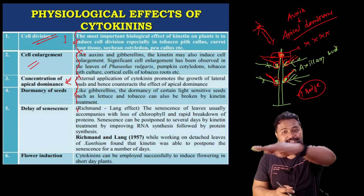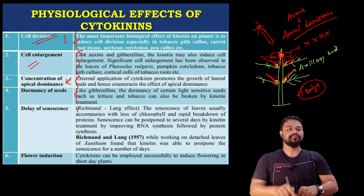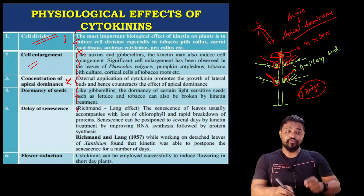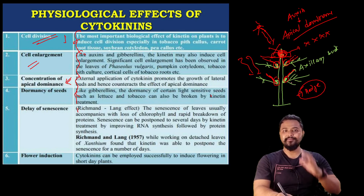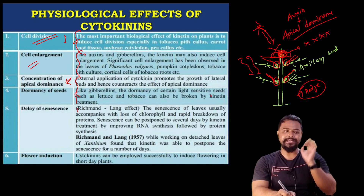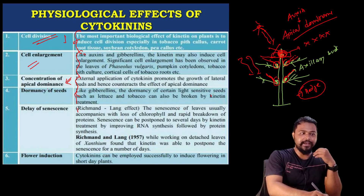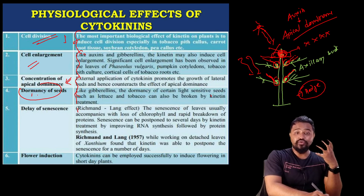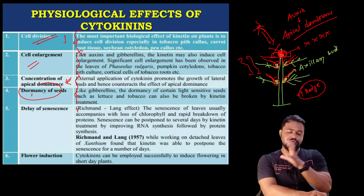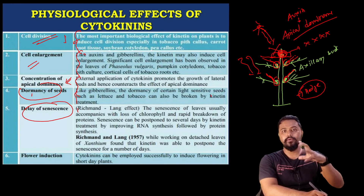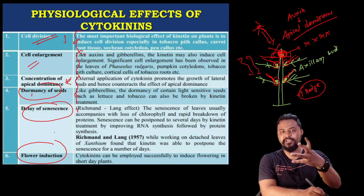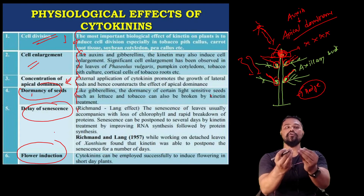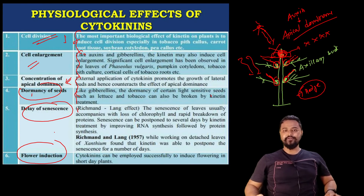So what do we call the cytokinin and auxin interaction? We call it apical dominance. The physiological effects of cytokinin include: cell division, overcoming apical dominance, breaking dormancy of seeds, delay of senescence, and flower induction. This is the physiological effect of cytokinin.